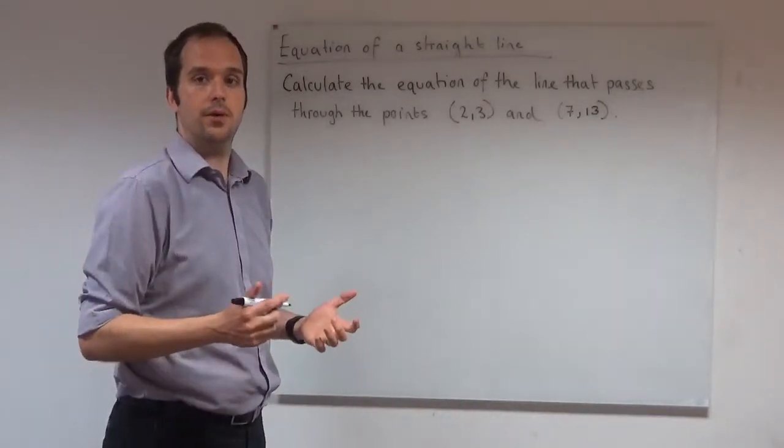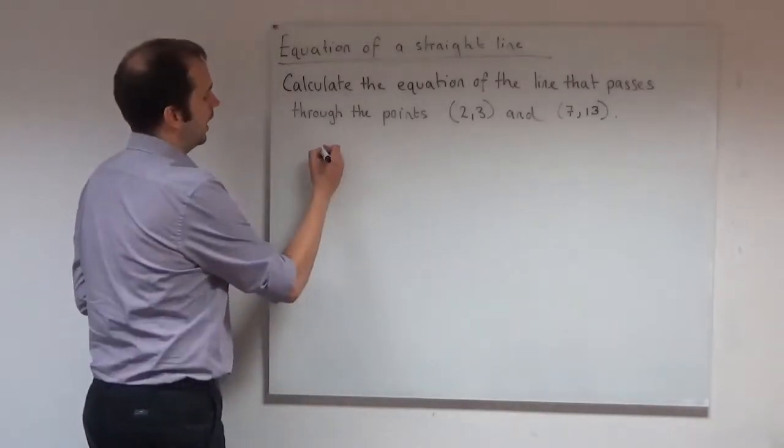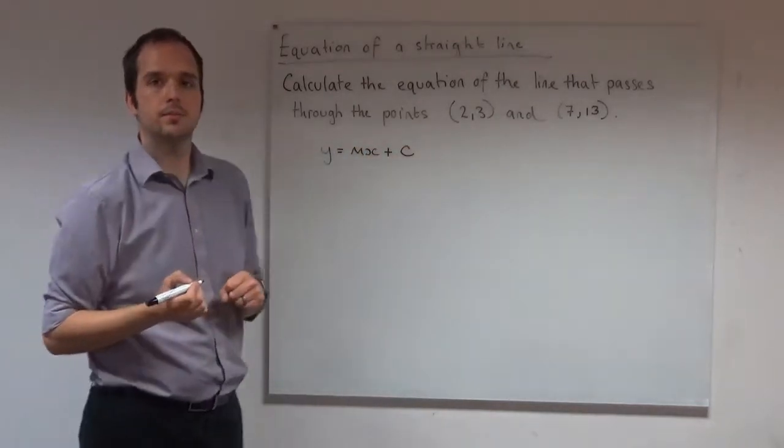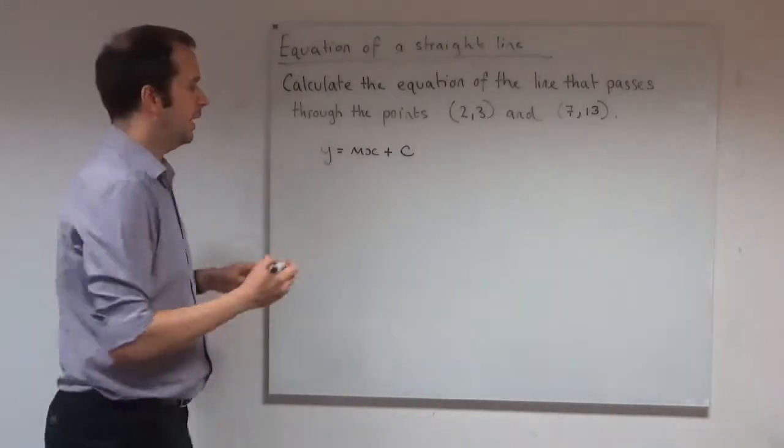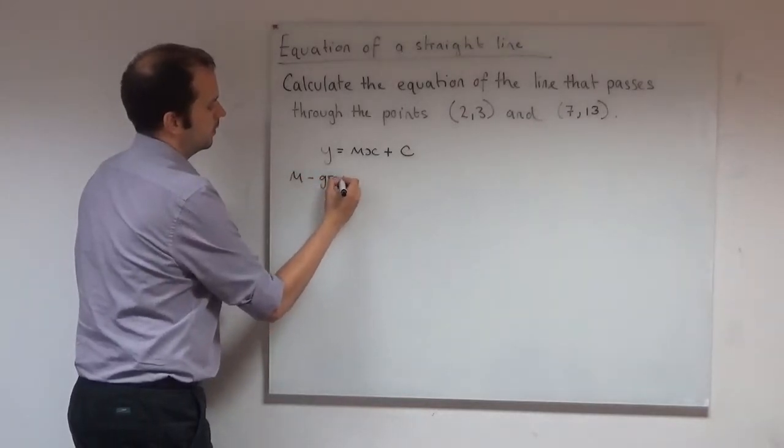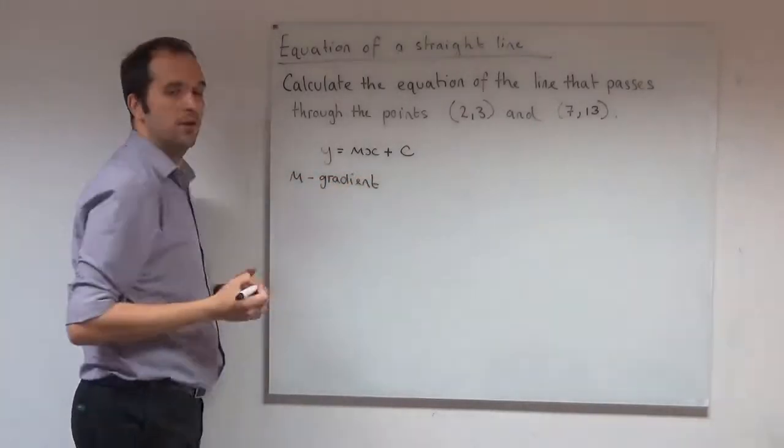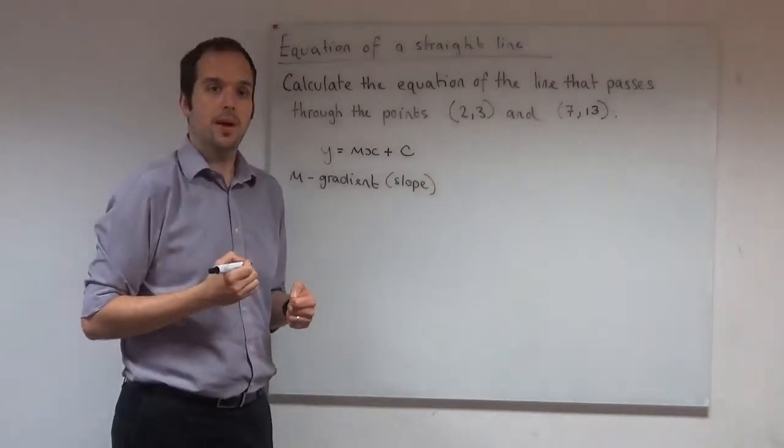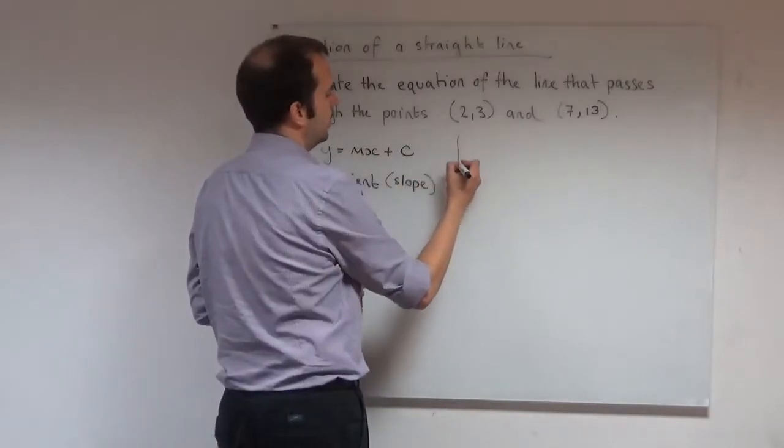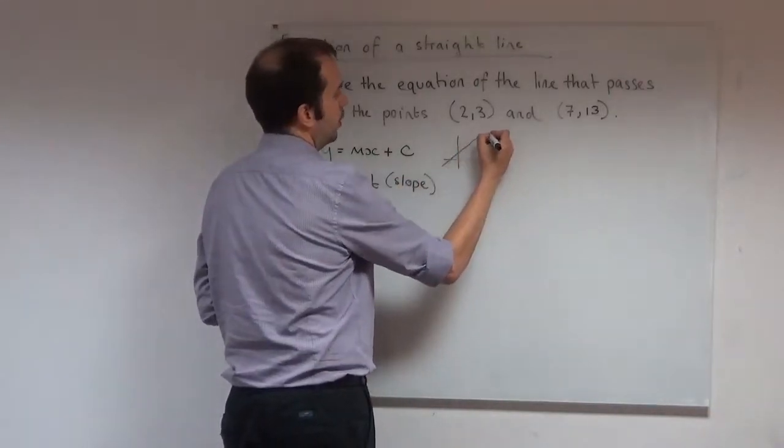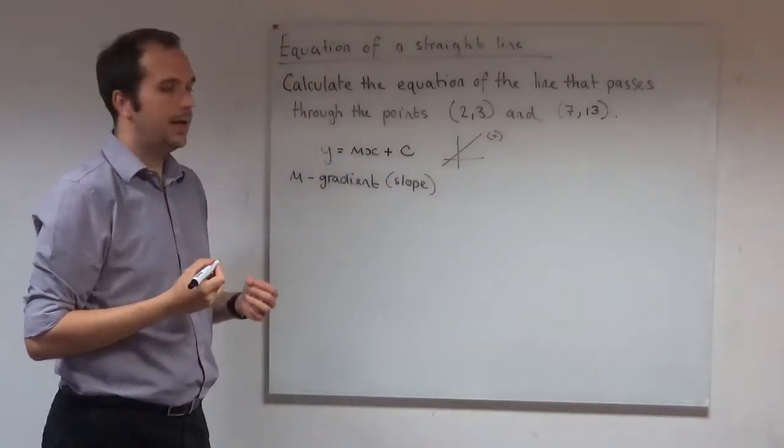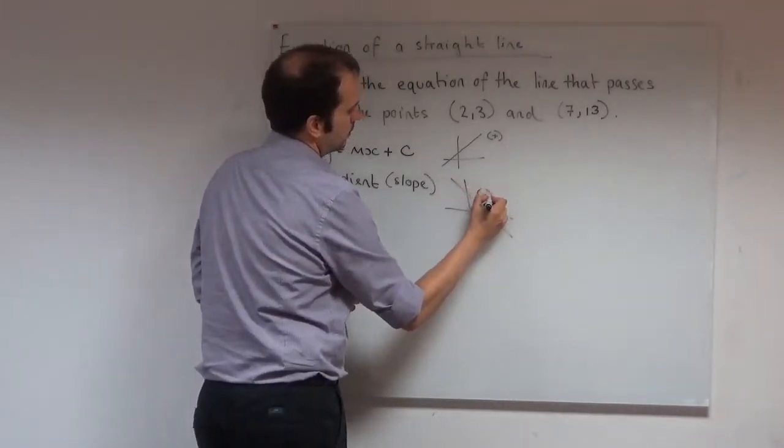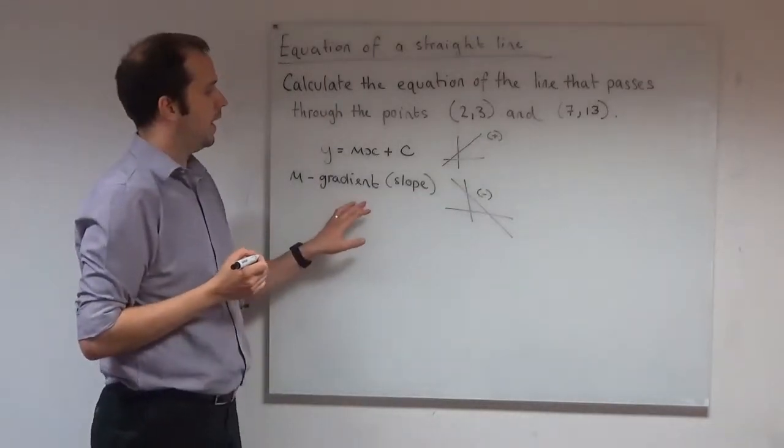So as a quick reminder, let's write down the general equation of a straight line. Any straight line can be written as y equals mx plus c. Some things to remember: m is the gradient of the line. And remember, gradient is another word for the slope. If you have a positive gradient, our line is sloping upwards. And if you have a negative gradient, the line slopes downwards. So that's our m, that's our gradient.